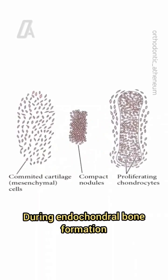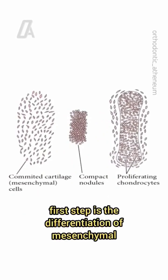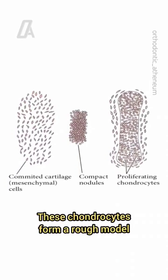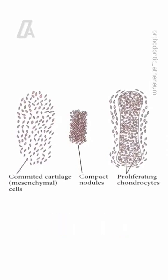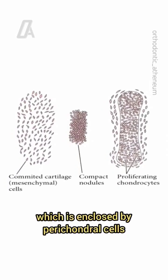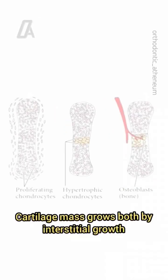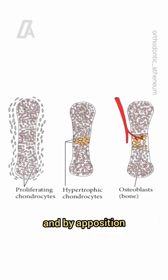During endochondral bone formation, the first step is the differentiation of mesenchymal cells into chondrocytes. These chondrocytes form a rough model, which is enclosed by perichondral cells. Cartilage mass grows both by interstitial growth and by apposition.